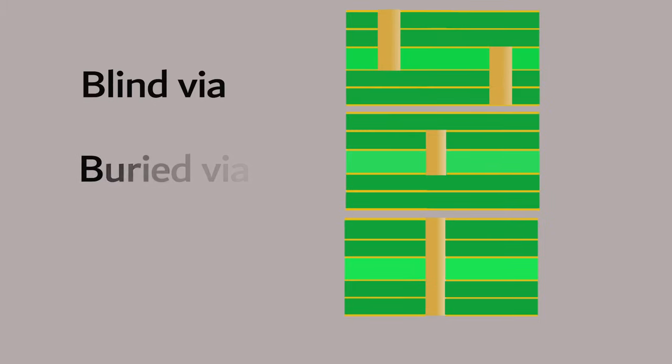Depending upon their functionality, vias are commonly classified into three types: blind via, buried via, and through-hole via.